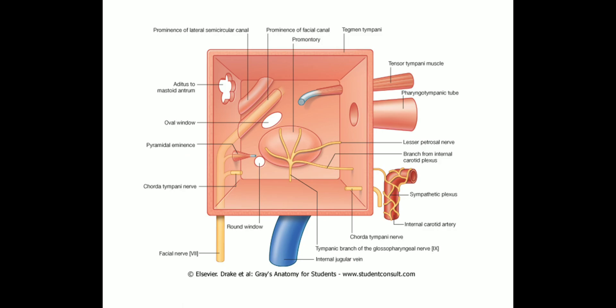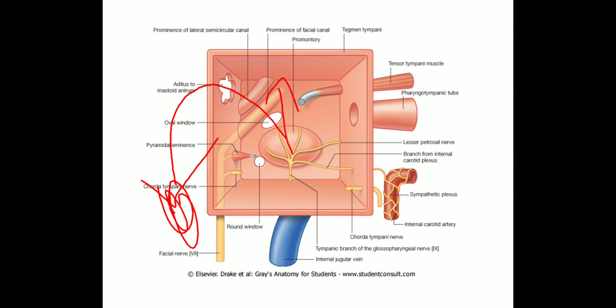Just by remembering this diagram, we can identify the intratemporal complications of otitis media. If the disease extends posteriorly, the mastoid air cells are present, so it will lead to mastoiditis — that is the first intratemporal complication. If the disease extends medially, the inner ear will get involved, that is labyrinthitis — the second intratemporal complication.